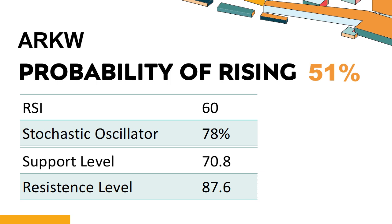What are the key technical drivers for ARKW? Technical Signals and Analysis: ARKW's 14-Day Relative Strength Index (RSI) value was 60. When the RSI is between 50 and 70, it generally indicates that the stock is moderately bullish. This means that the security's price has been rising but has not yet reached overbought levels, which are usually considered an RSI reading of 75 or higher.